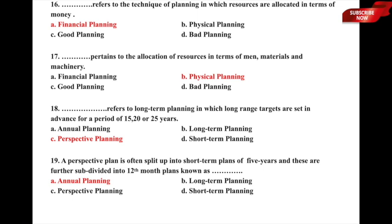Question 18: Dash refers to long-term planning in which long-range targets are set in advance for a period of 15, 20, or 25 years — whether it is a) annual planning, b) long-term planning, c) perspective planning, or d) short-term planning. The correct answer is option c) perspective planning.